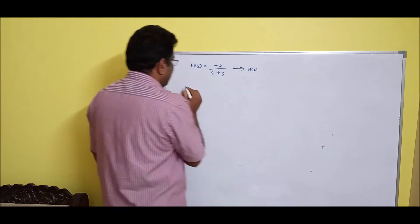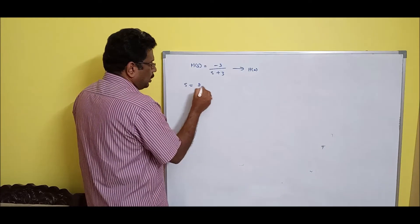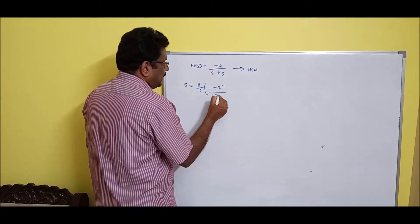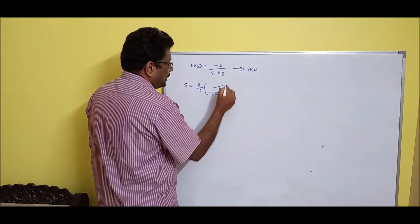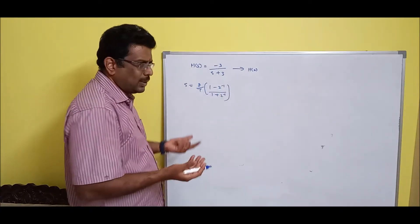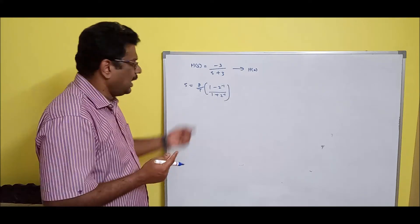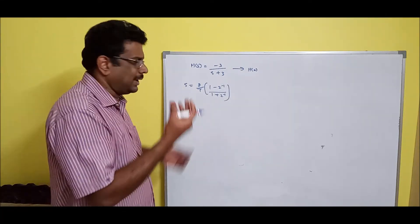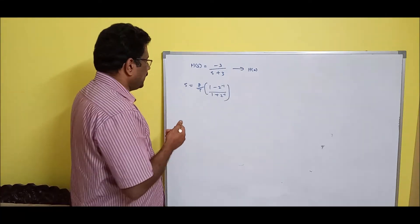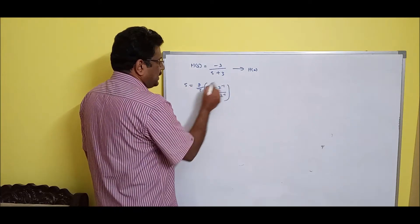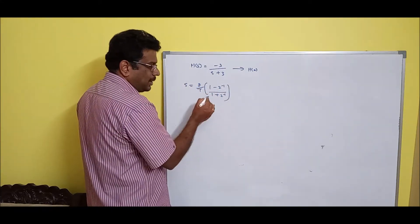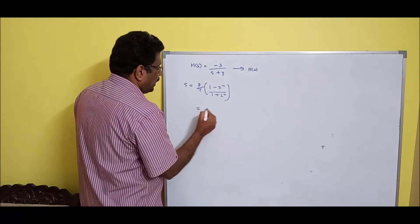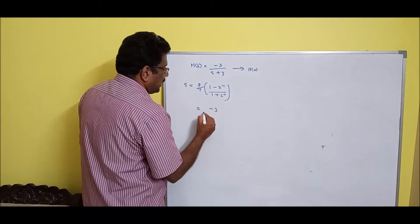The formula is: s = (2/T) × (1 - z⁻¹) / (1 + z⁻¹). If T is not given, take it as 1. Sometimes they will mention T = 0.5 — take accordingly. Now replace s with this formula.